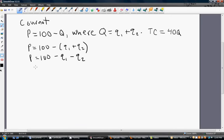So from firm 1's perspective, total revenue is price times the amount of output produced by firm 1. So let's get firm 1's total revenue equation.